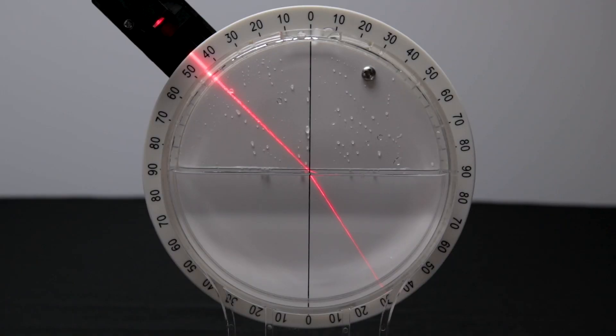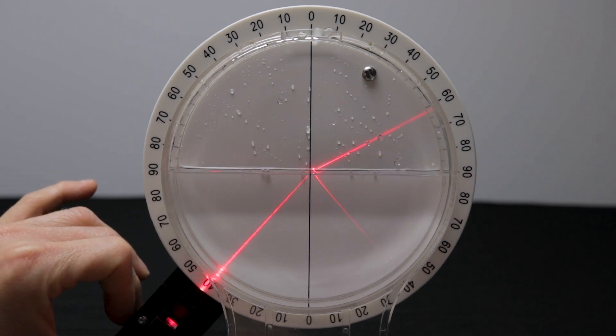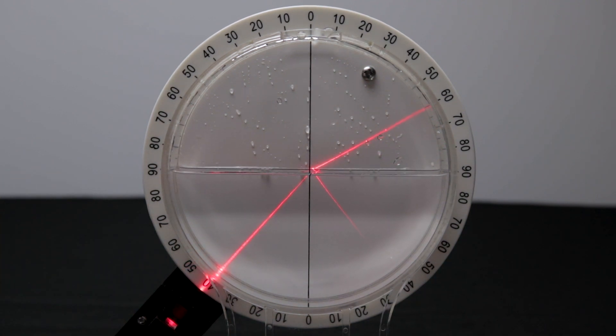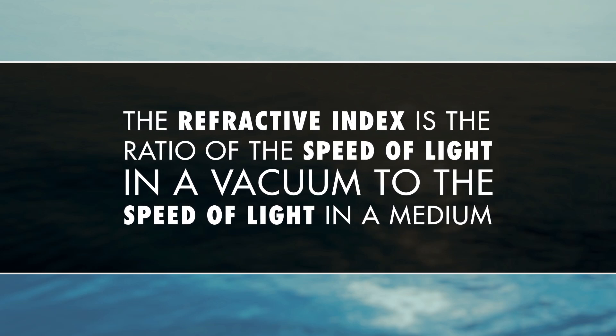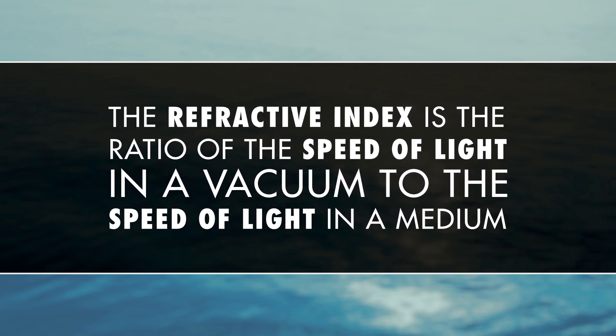Now position the laser so it first passes through the water then into the air. Here you can see that the light reflects to the other side, but once you move the laser you'll see another beam appear — this is the refracted beam. From here we can use the refraction tank to calculate the index of refraction of water. The refractive index is the ratio of the speed of light in a vacuum to the speed of light in a medium.